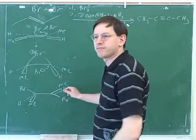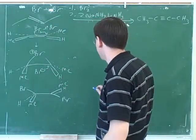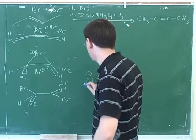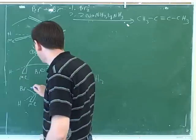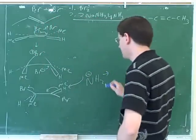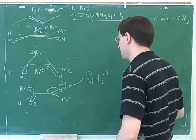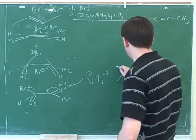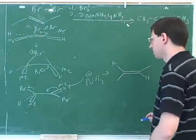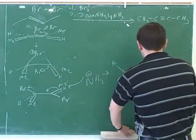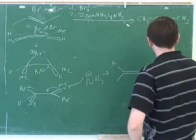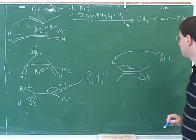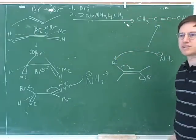Well we just did the mechanism for this, so I don't know if we should go through it again. The first step would be taking one of the hydrogens and kicking off one of the leaving groups. And then we would take off the other hydrogen and kick off the other leaving group, and that would give us this as our final product.